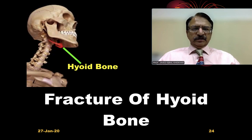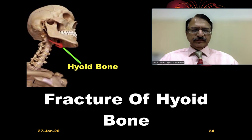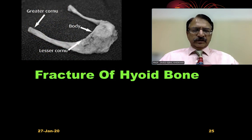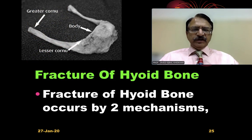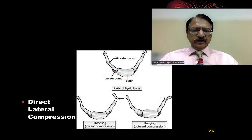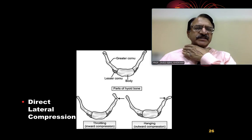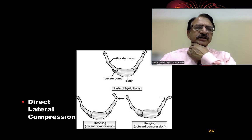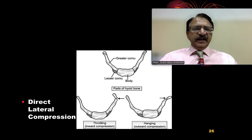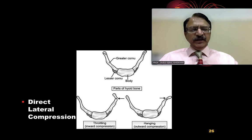The next important thing to be discussed is the fracture of the hyoid bone. There are two mechanisms involved. The first one is direct lateral compression, that is in manual throttling — lateral compression — and this will cause the fracture segment to be displaced inward.